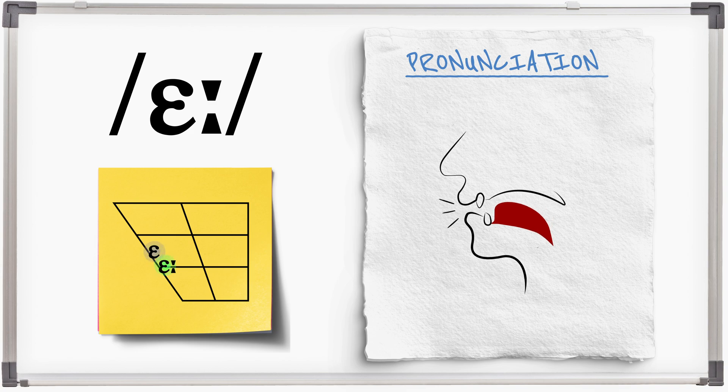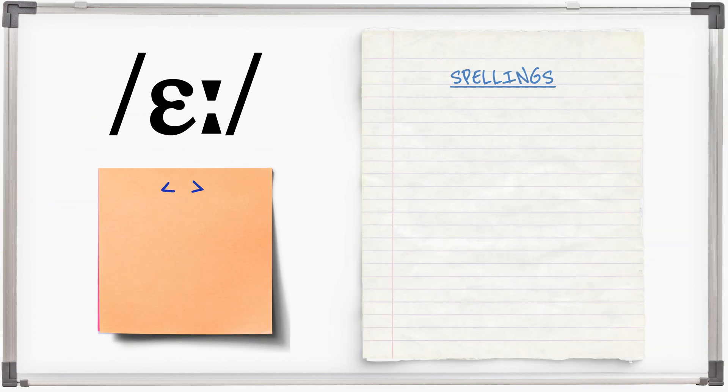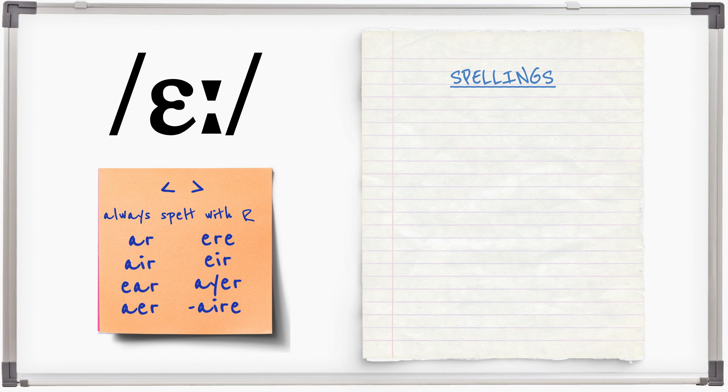E and air. Air has several spellings and the letter R is always present, though this is silent in GB English unless a vowel sound follows it.